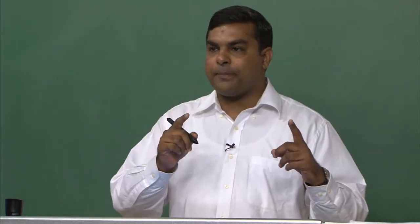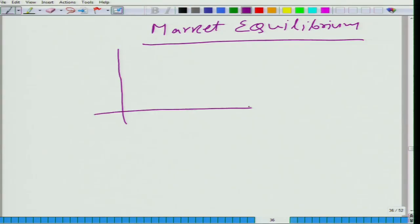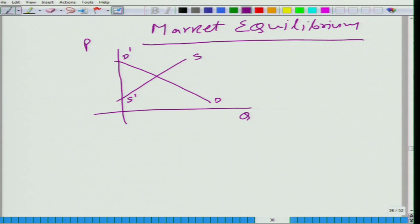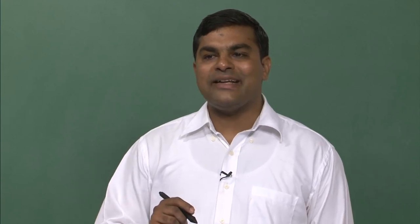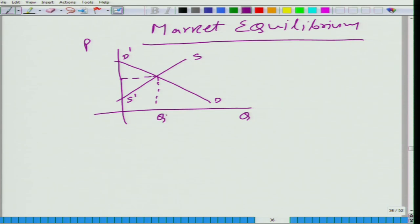What you meant to say is: at the price at which quantity demanded is equal to quantity supplied, that price-quantity pair constitutes the market equilibrium. Let me draw this: SS' is supply, DD' is demand, with price on the Y-axis and quantity on the X-axis. Market equilibrium is the quantity-price pair (Q*, P*) at which quantity demanded equals quantity supplied — the star denotes this special equilibrium pair.